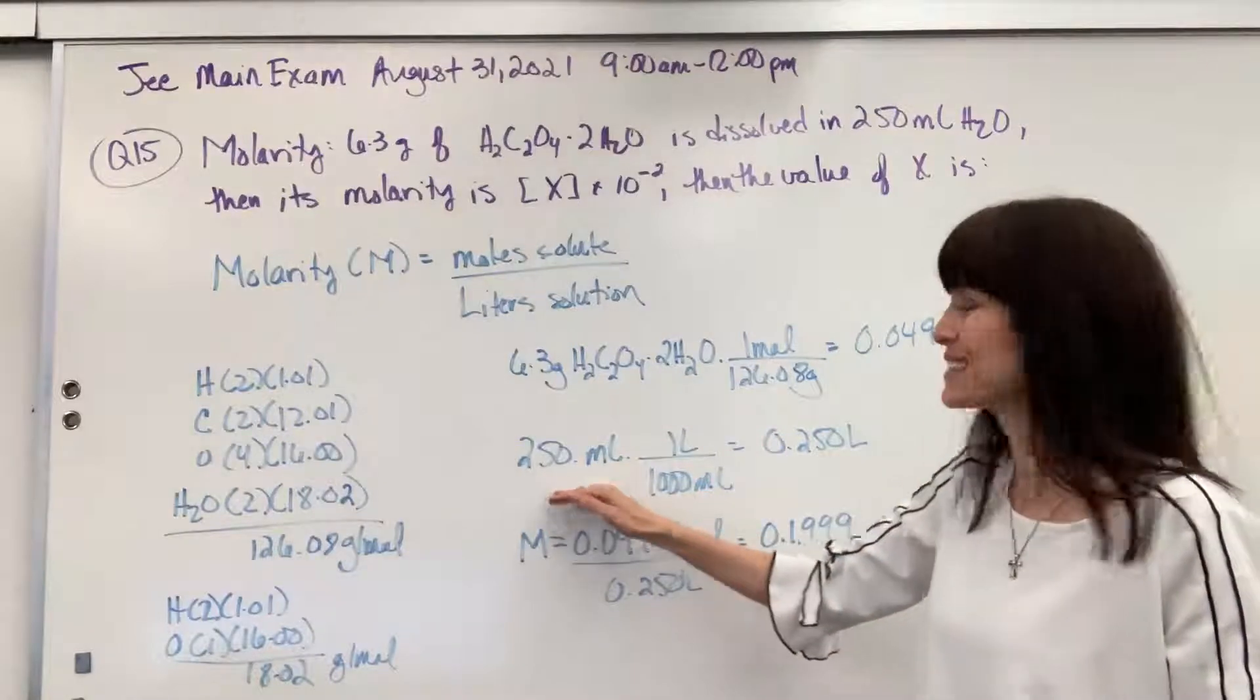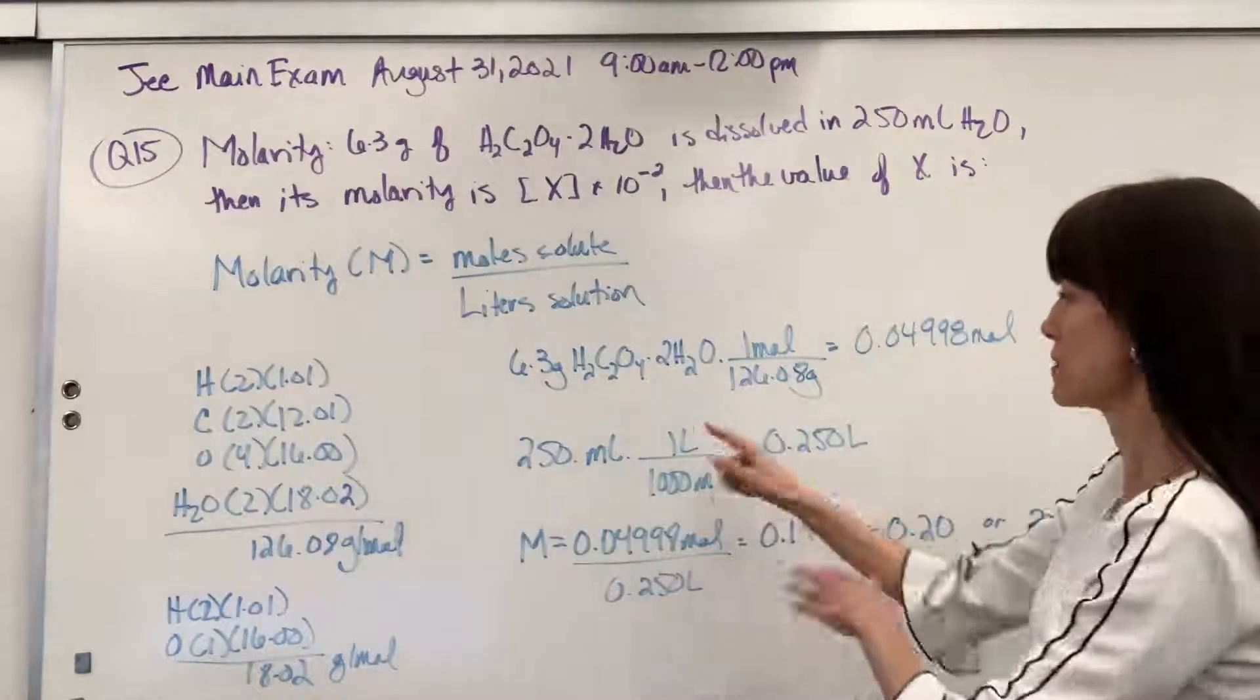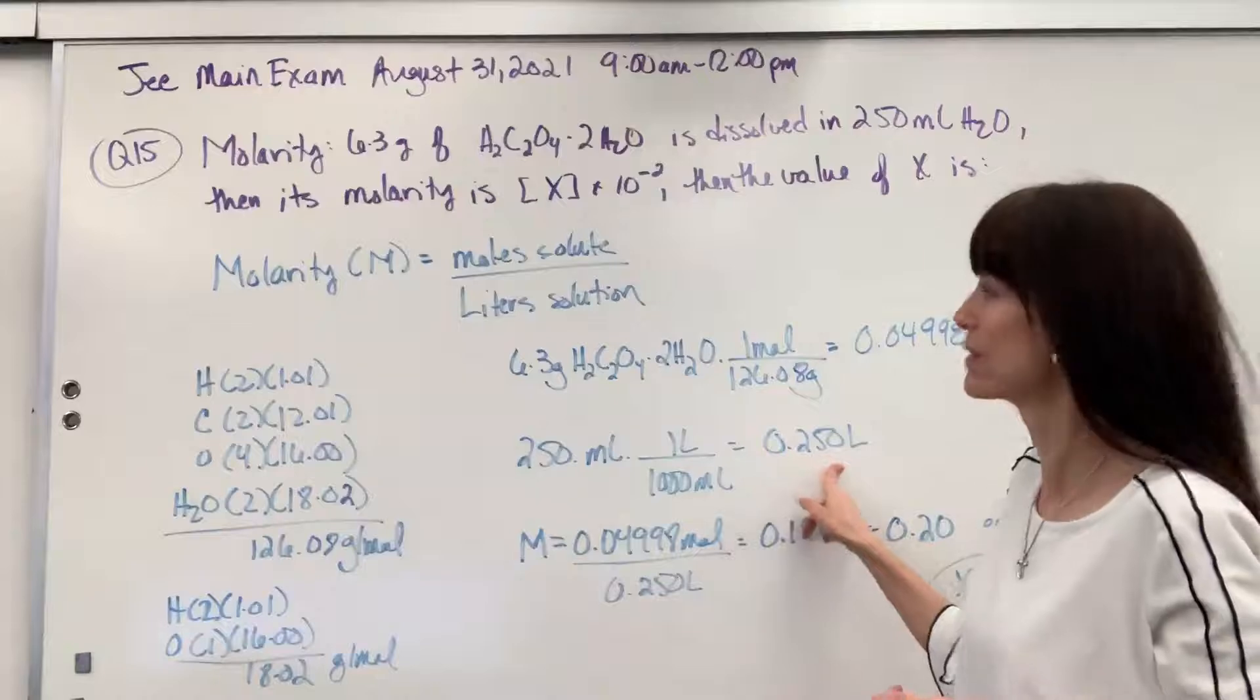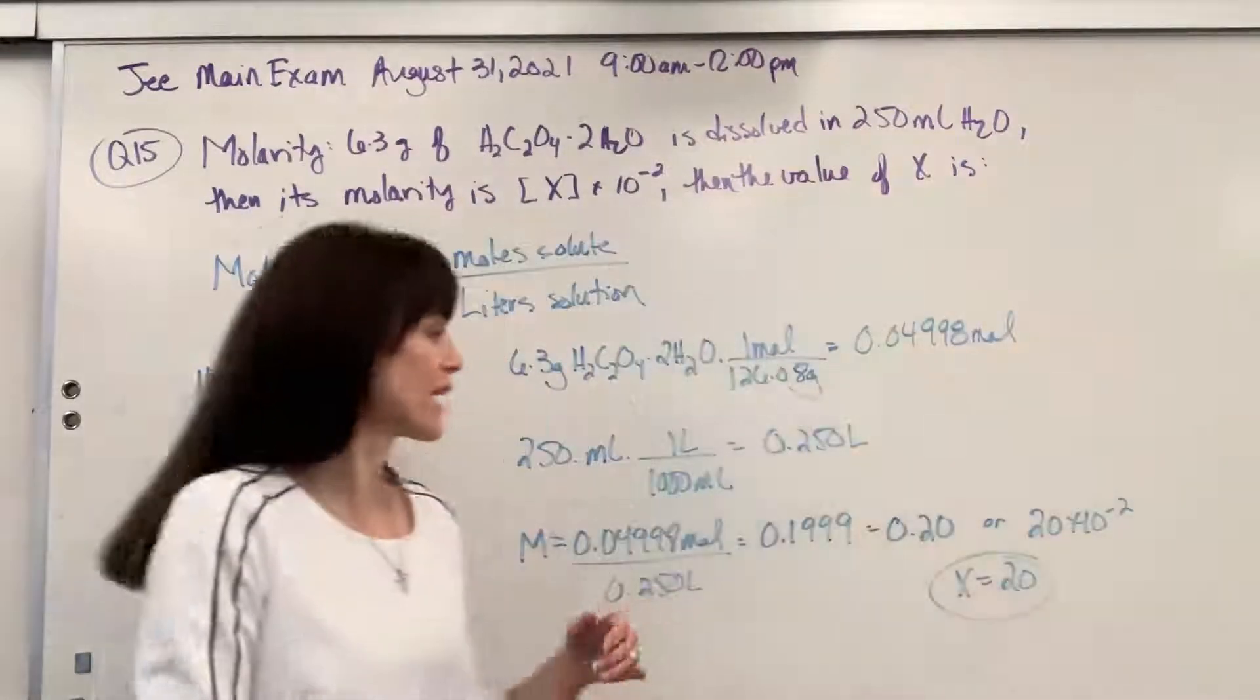Then I take my 250 mL, divide that by 1,000 mL per one liter. It gives us 0.25 liters. So I put that there for my liters. Let's put it together.